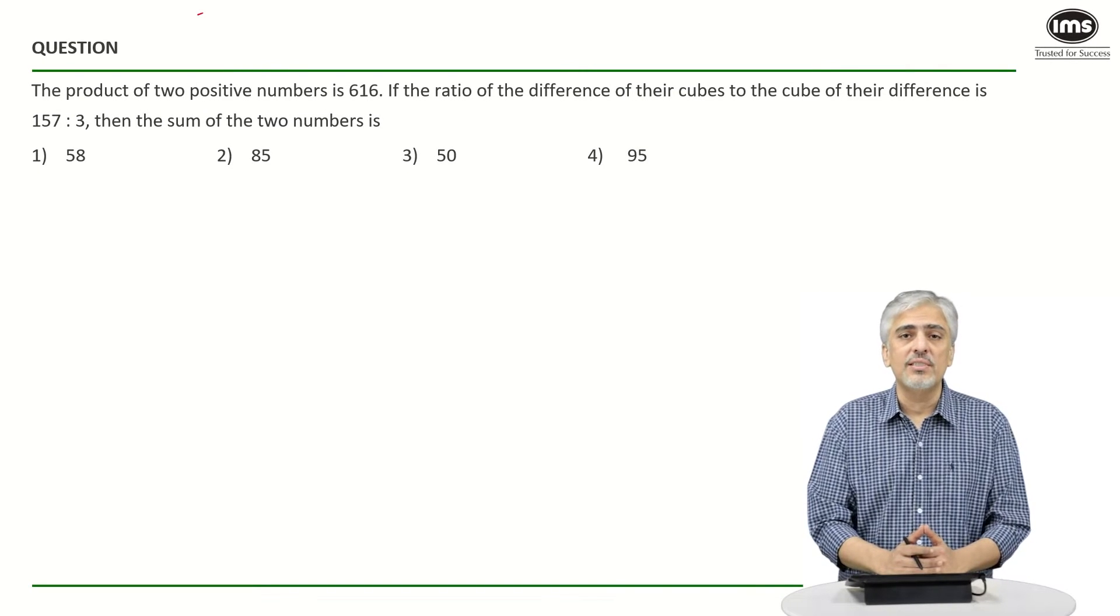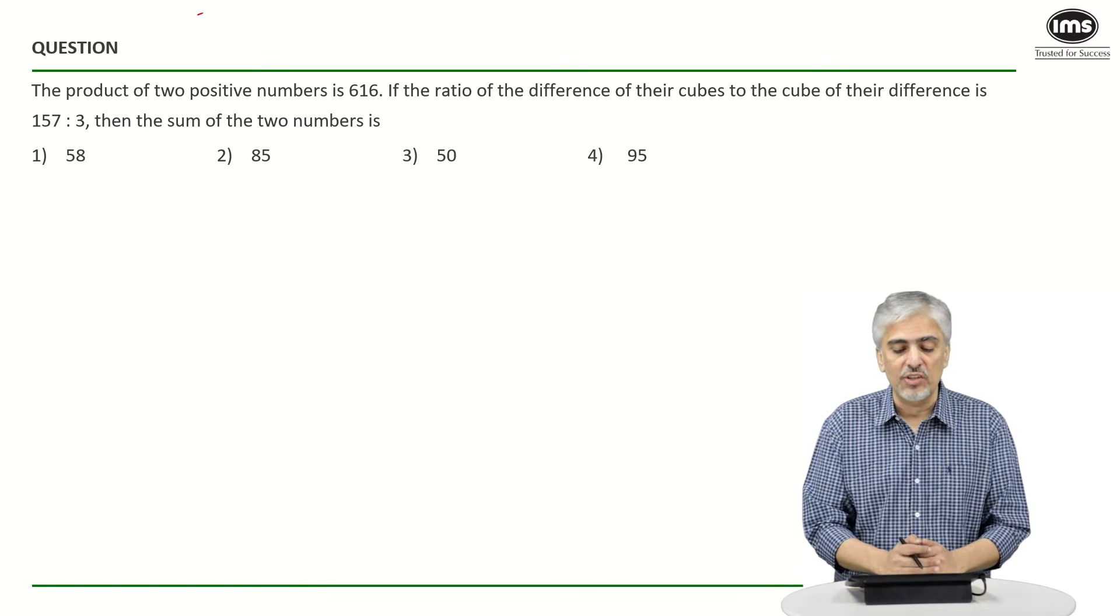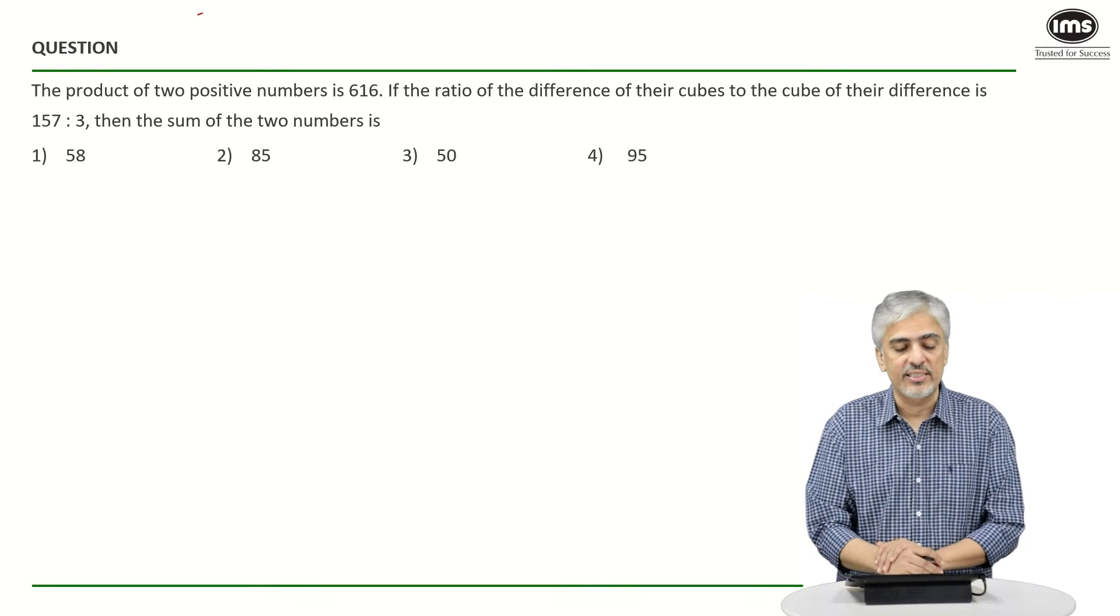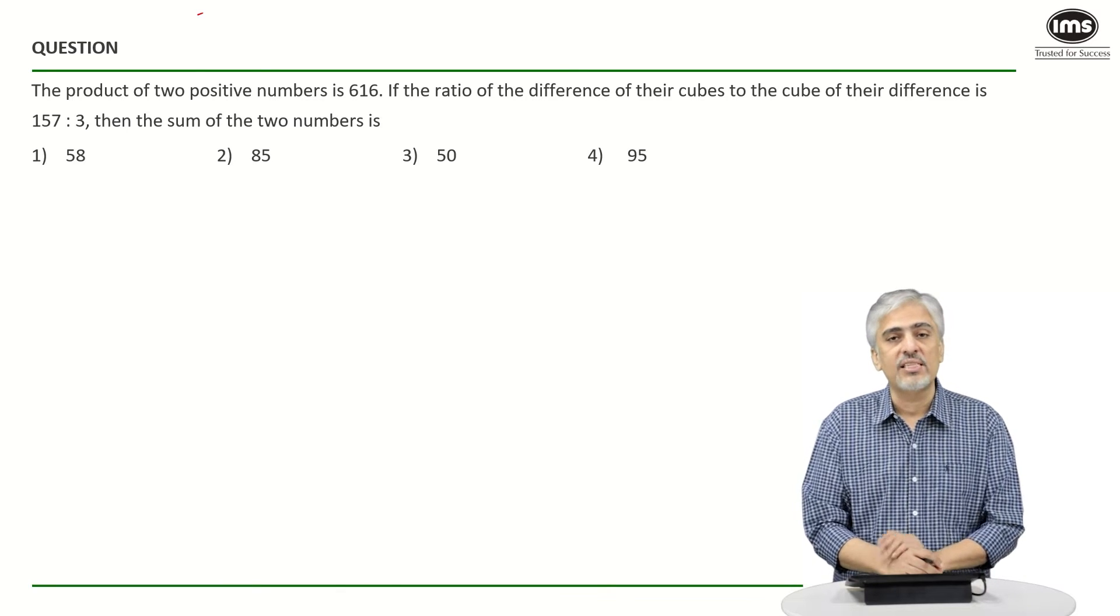The product of two numbers is given as 616 and they have said the ratio of the difference of their cubes to the cube of their difference is 157 is to 3. Then the sum of the numbers is what?